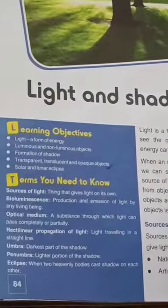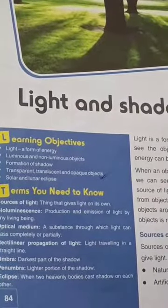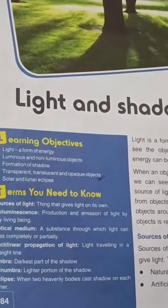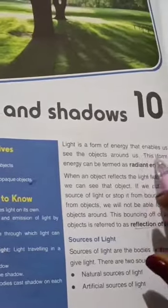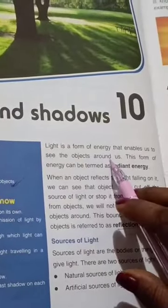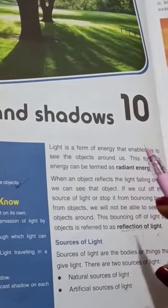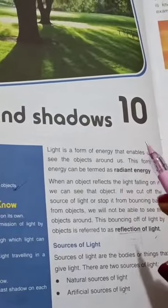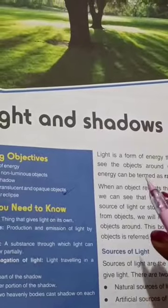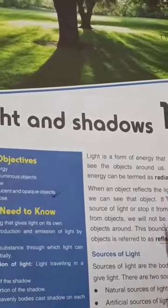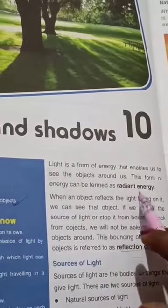First of all, I will discuss about what is light. Light is a form of energy that enables us to see the objects around us. In other words, light is energy that allows us to see things. This is also termed as radiant energy.